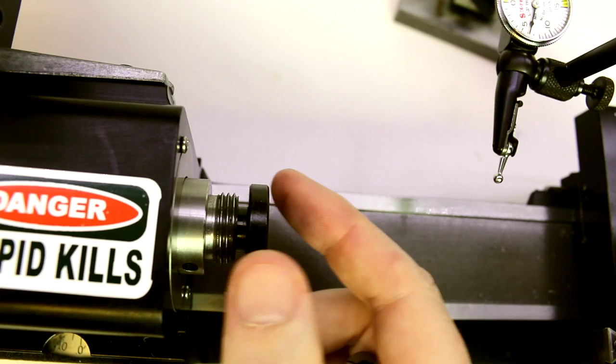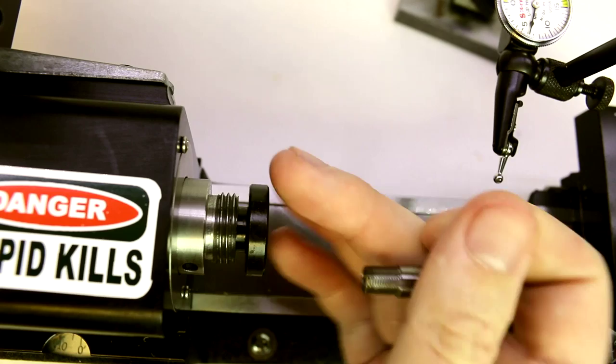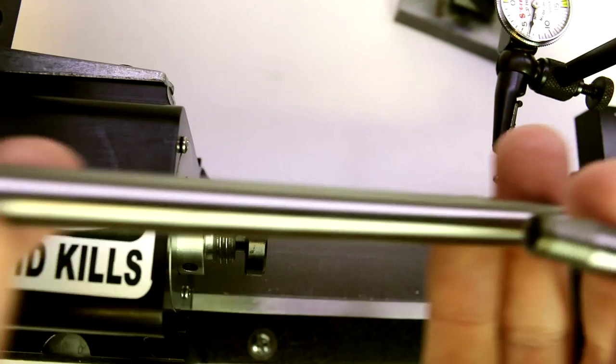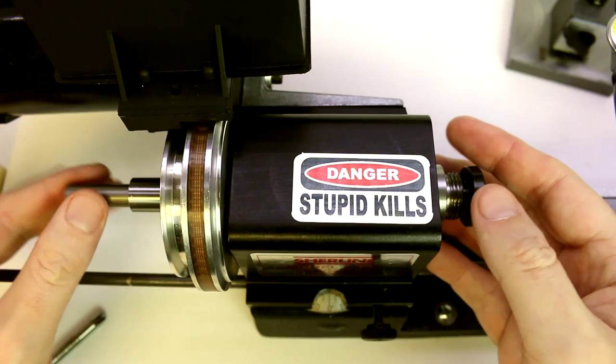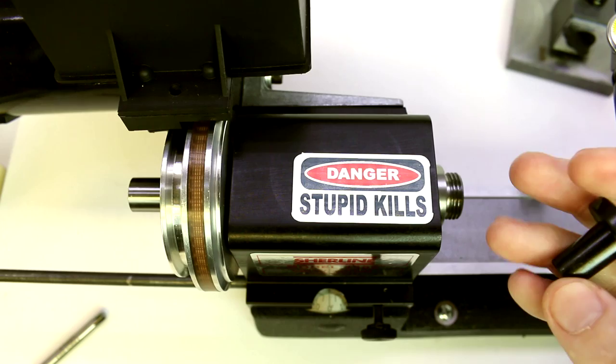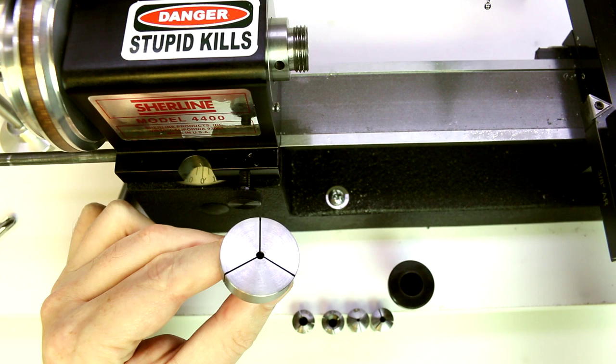So to remove it, we simply unthread the knob on the other end down there. This will slide right out. We can then pull the draw bar out, and then we come in with the supplied knockout bar and just give it a couple taps, and out come the collet adapter.